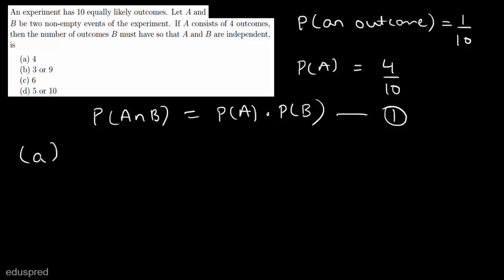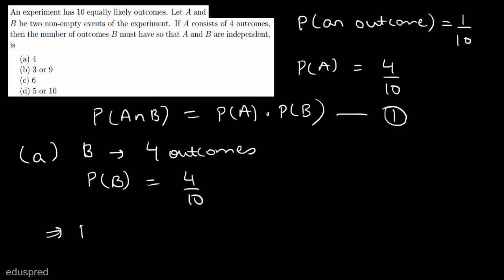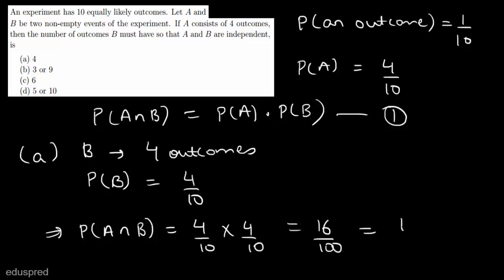Let's see if option A satisfies this equation. According to option A, B has four outcomes, so the probability of B will be equal to 4 divided by 10. This implies that the probability of A intersection B will be equal to 4/10 multiplied by 4/10, which is equal to 16 divided by 100, or 1.6 divided by 10. Note that the numerator of the probability of A intersection B cannot be 1.6 — it has to be a natural number, since you cannot have 1.6 outcomes common between A and B. So option A is not the answer.